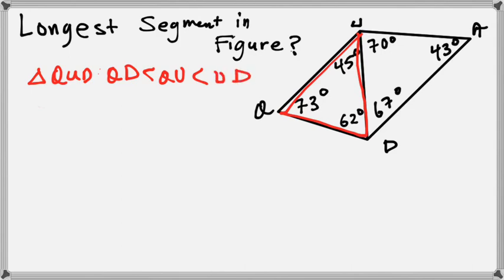But UD is interesting because it belongs to two triangles. UD is also part of this shape right here, this blue triangle, named UAD. So let's look at triangle UAD's side angle relationship.